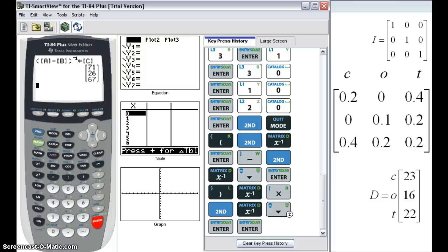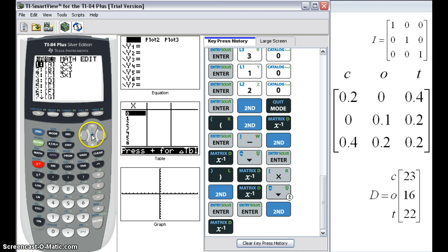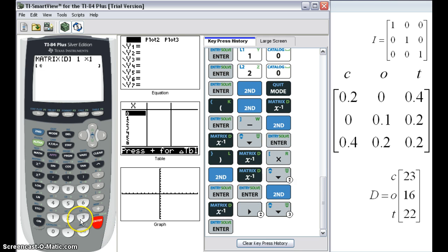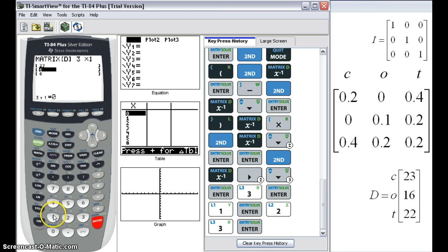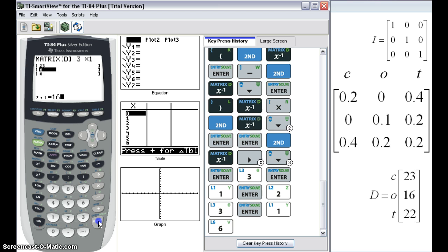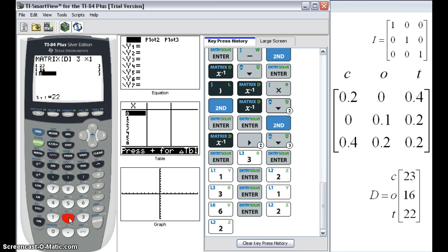In my calculator, I've already entered I as the identity. I've already entered the technology matrix, so all I need to update is the demand matrix. So, I'm going to go 2nd, matrix, arrow over to edit. And I'm going to go the whole way down and enter a new one rather than replacing the matrix I had in. So, for letter D, I'll enter. Demand matrix is three rows by one column. And my numbers are 23, 16, and 22. Once I've entered that, I can quit.